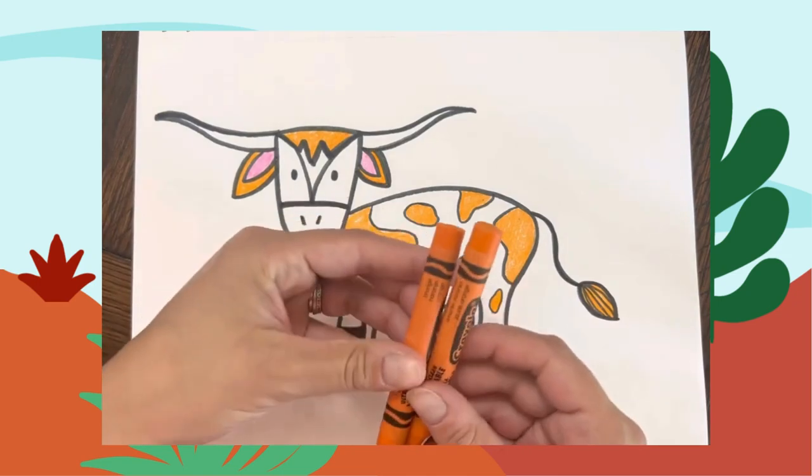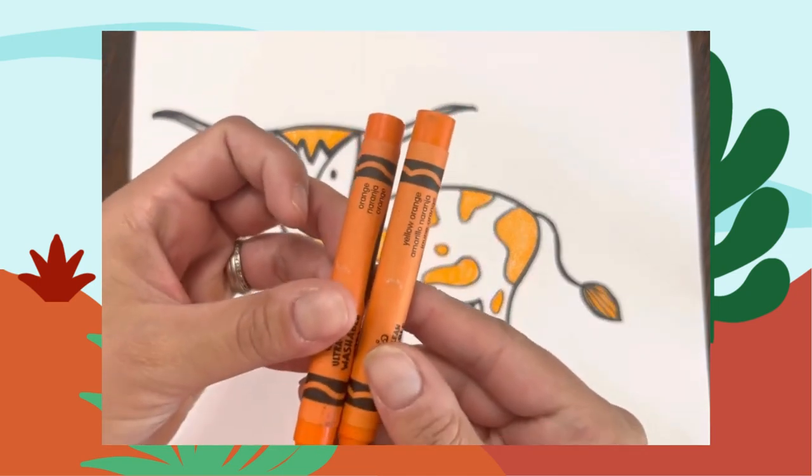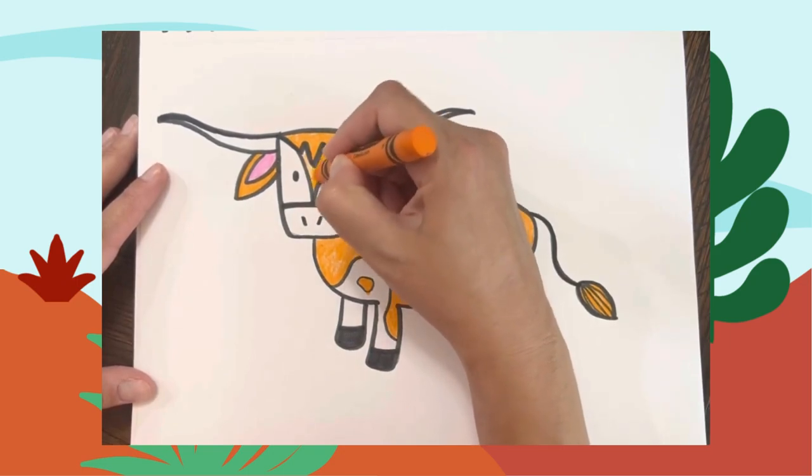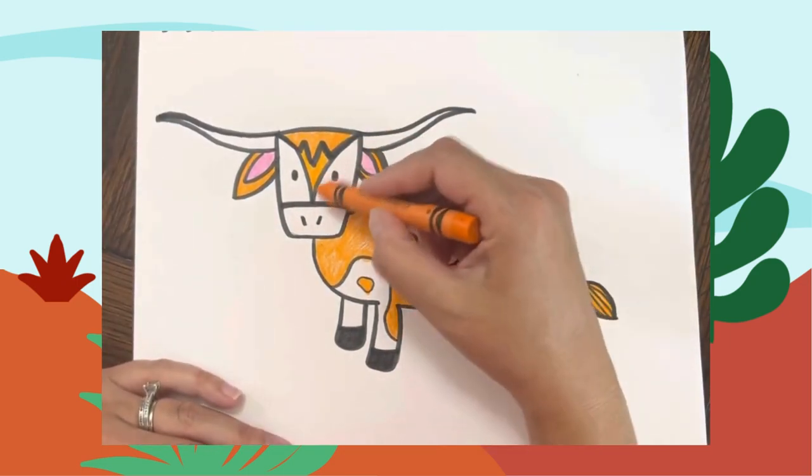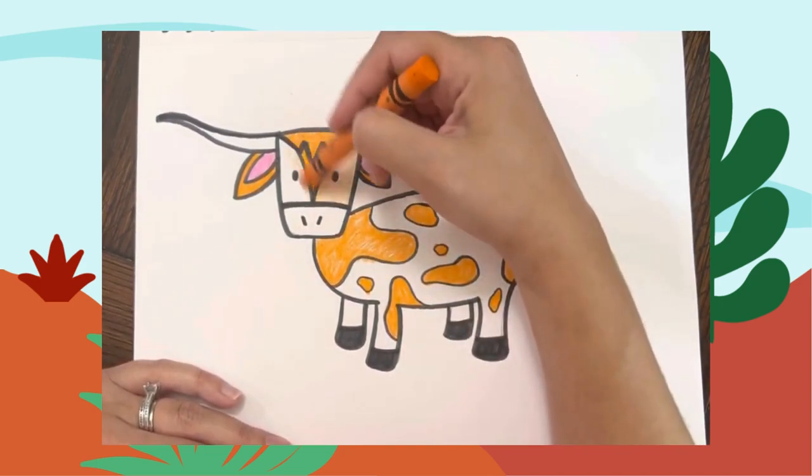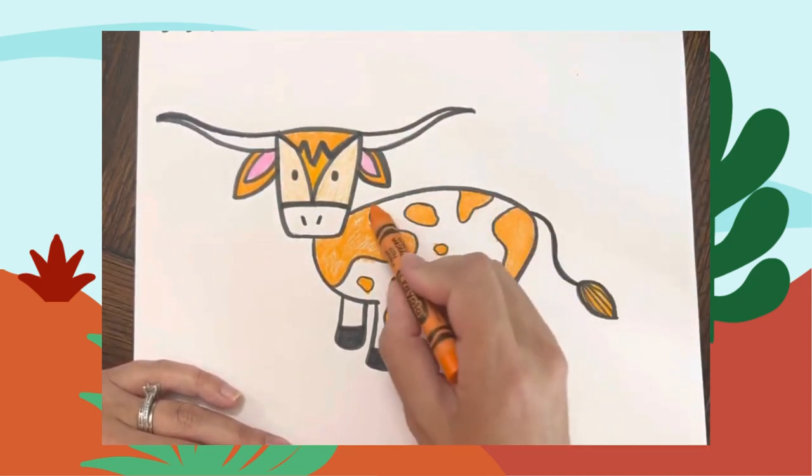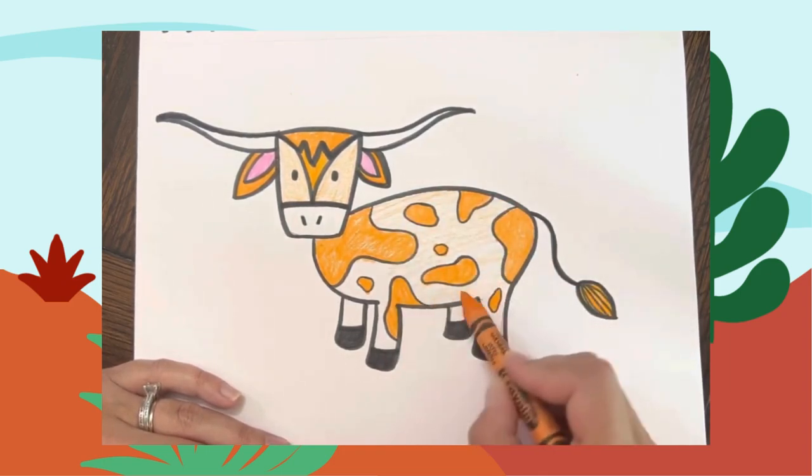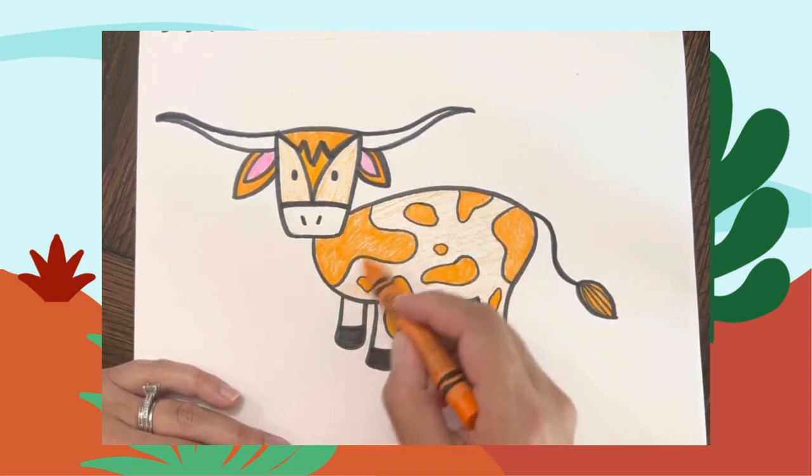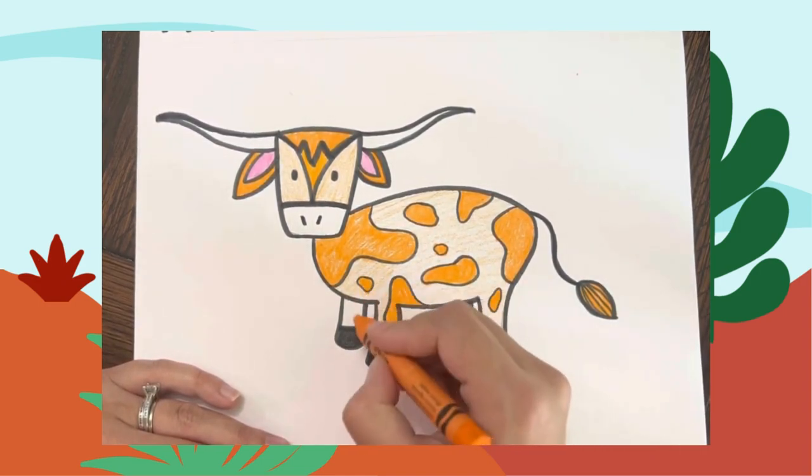I'm going to use a lighter shade of orange—it's a yellow-orange—to color in his body, and I'm just going to color really lightly. I'm going to shade in those back legs darker so it looks like some shadow.